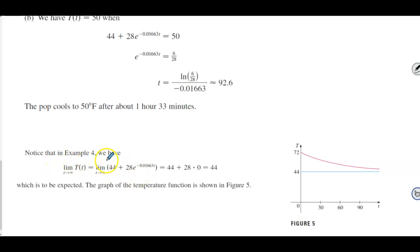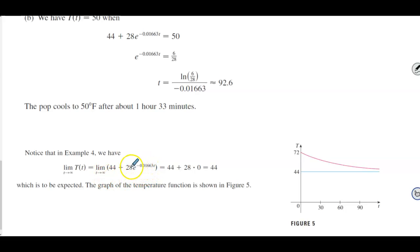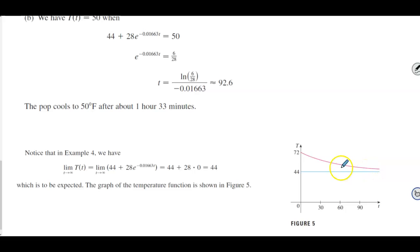Note that in Example 4, the limit as t approaches infinity of T(t) = lim[44 + 28e^(−0.01663t)] = 44 + 0 = 44, which is to be expected — the soda eventually reaches the refrigerator temperature. The graph of the temperature function shows it leveling off at 44°F, confirming this behavior.